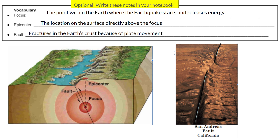The epicenter is a location on the surface directly above the focus — on the surface of the Earth where we're standing, directly above the focus. A fault is a fracture in the Earth's crust caused by plate movement. Earthquakes can happen along faults like the San Andreas Fault in California at transform boundaries, but also at convergent and divergent boundaries.